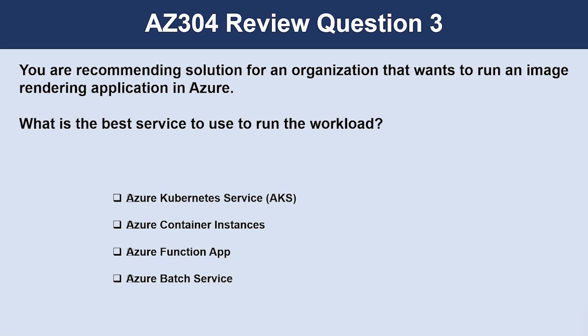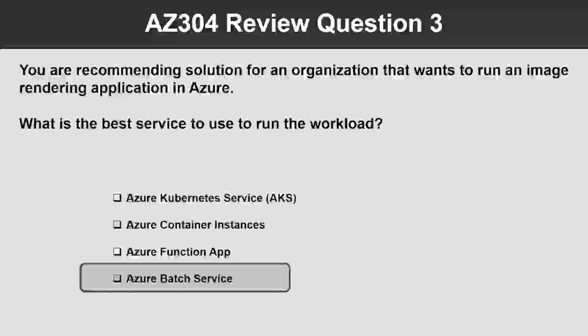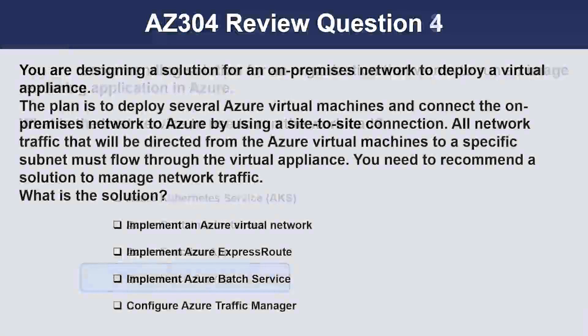Question number three. You are recommending a solution for an organization that wants to run an image rendering application in Azure. What is the best service to use to run the workload? The correct answer is Azure Batch Service. Azure Batch Service uses a pool of compute resources, which is VM scale set, to carry out batch processes in parallel. Azure Batch Service is intended for running parallel processes.